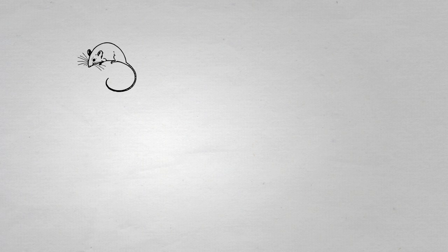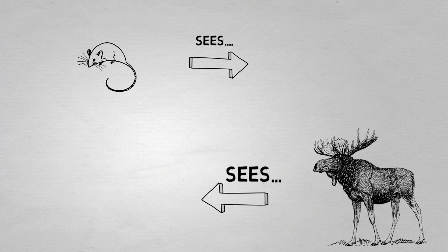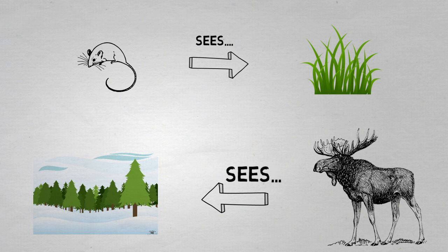To give you an illustration, mice and moose are herbivores in North America. But despite both eating plants, they move and feed over very different areas. So the landscape perceived and used by moose will be much larger to that seen and used by mice.